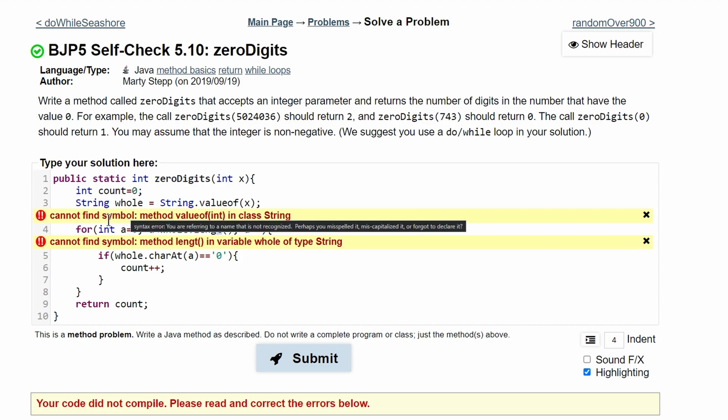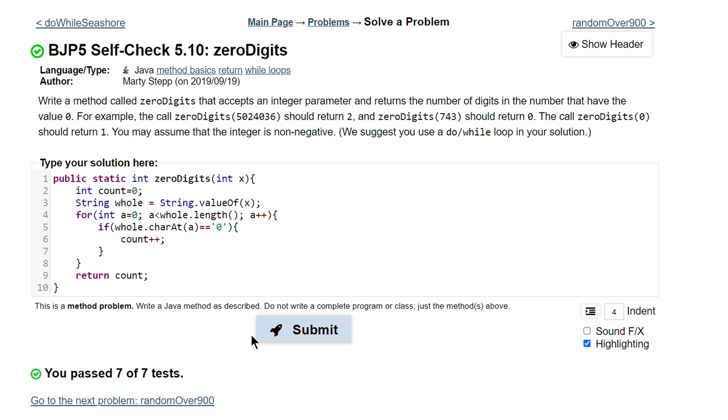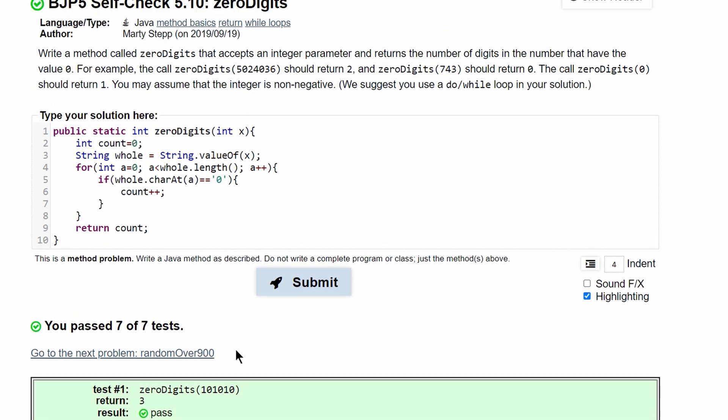We have an issue here - this O needs to be capitalized in String dot valueOf and this needs to be spelled better. If we submit this, we see that we've passed all of these tests.